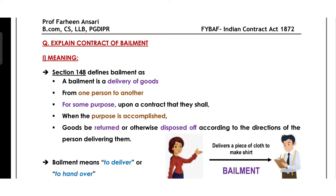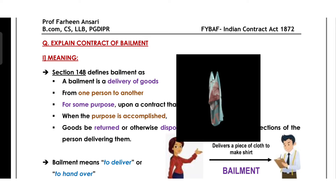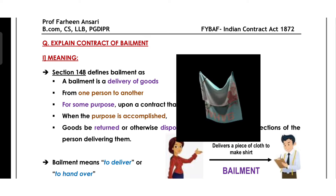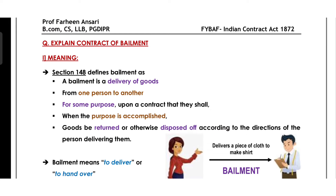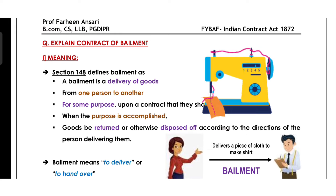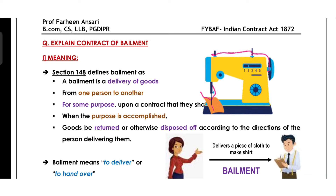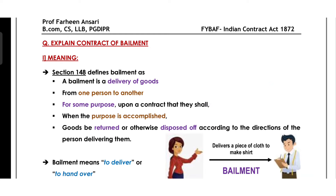Let's understand by way of an example. Say you have a piece of cloth from which you have to make a shirt. You have to take that piece of cloth to a tailor to stitch it. You have to hand over that piece of cloth — deliver it to the tailor. This is called bailment. Why hand over? For the purpose of stitching a shirt. And when the shirt is done, the tailor will return it to you. This is the concept of bailment.